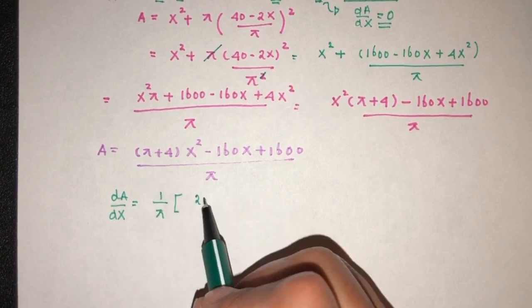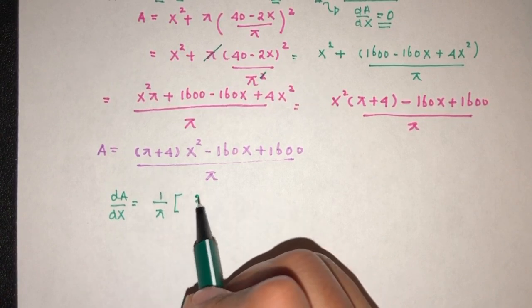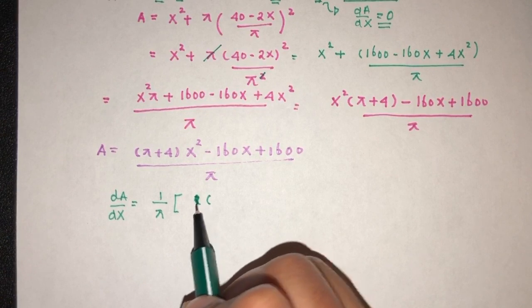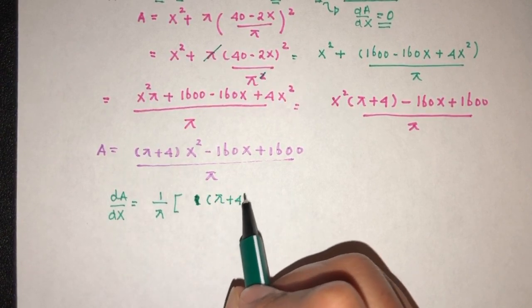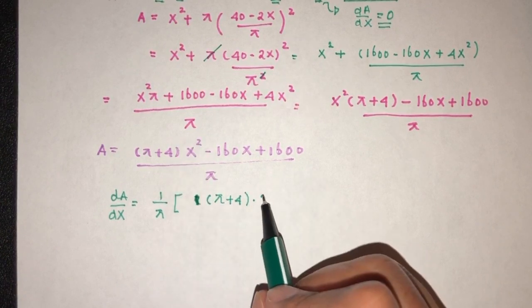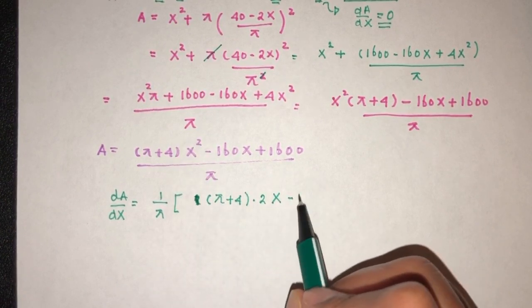This is also a multiple, right? We can take it out so I don't confuse you guys. This is only a multiple. That will be outside. Multiply by 2, that will be 2. And we have x remaining minus 160.